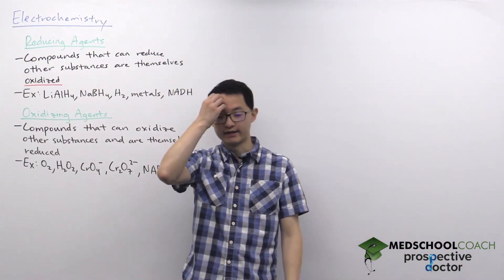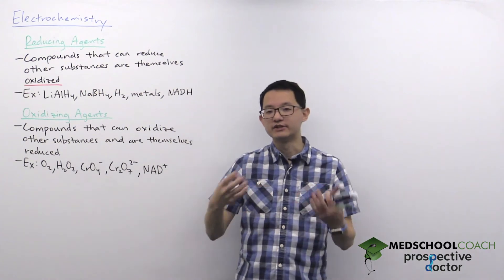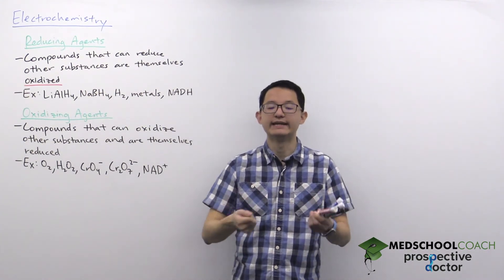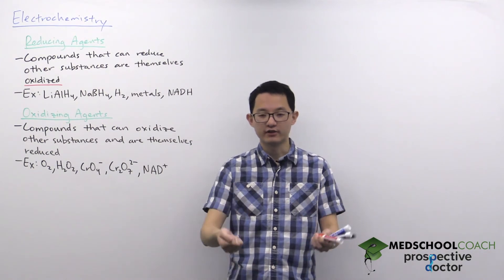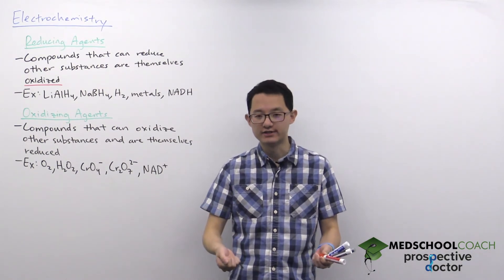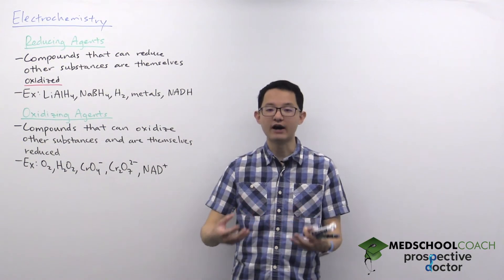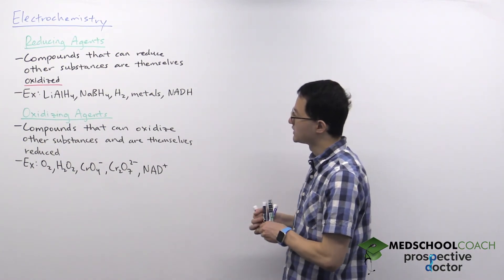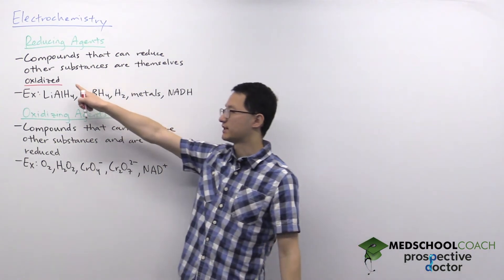The way it works is if it wants to reduce other compounds, it has to cause those other compounds to gain electrons. So in order for those other species to gain electrons, the reducing agent itself has to give up electrons. When you're looking for a reducing agent, since you're looking for something that gets oxidized, you're looking for something with a very high oxidation potential.